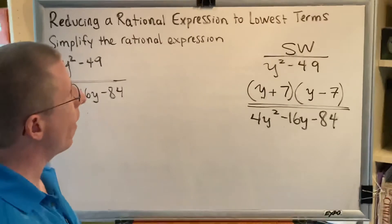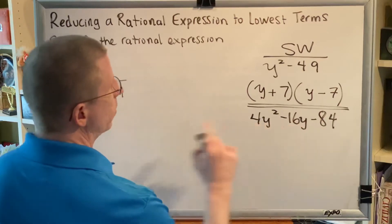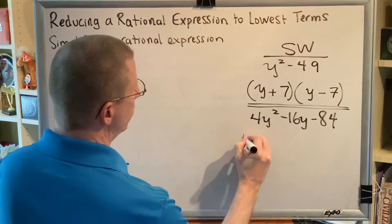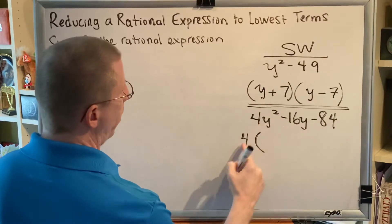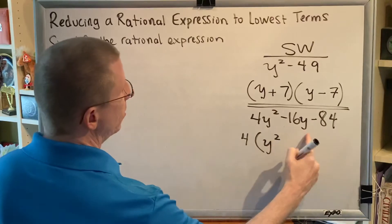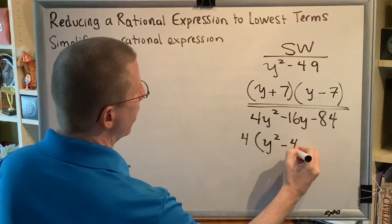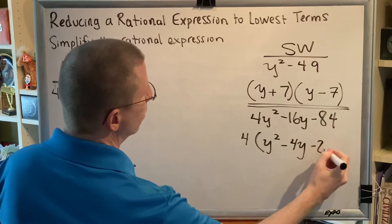Next step is GCF. Well, the GCF here is 4. All three of these numbers are divisible by 4. So let's divide and take out the 4. So 4y squared divided by 4 is just y squared. Negative 16y divided by 4 makes negative 4y. And negative 84 divided by 4 makes negative 21.